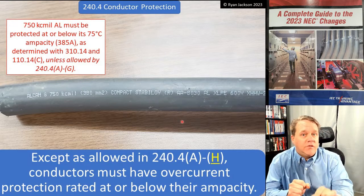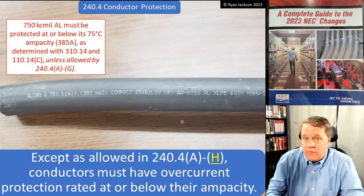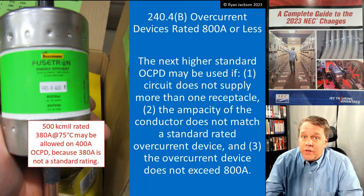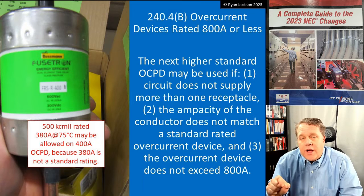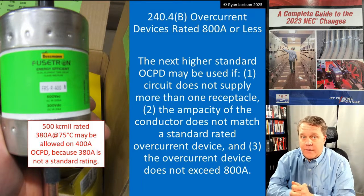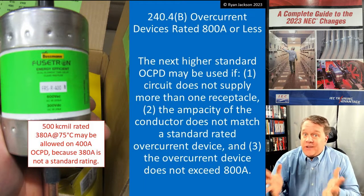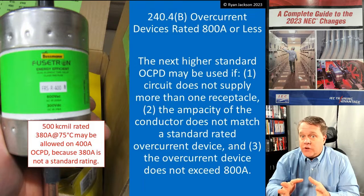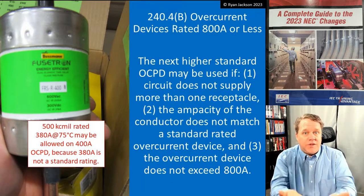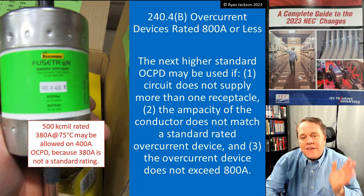This rule means you can put a maximum 385-amp breaker or fuse to protect this 385-amp wire, except as allowed in (A) through (H). Now, 240.4(B) is probably the rule you need to know more than any other — it covers overcurrent devices rated 800 amps and less. How often are you putting in breakers or fuses larger than 800 amps? Seriously, 99% of the breakers and fuses you install are 800 amps or less, so this is the rule for 99% of your work.